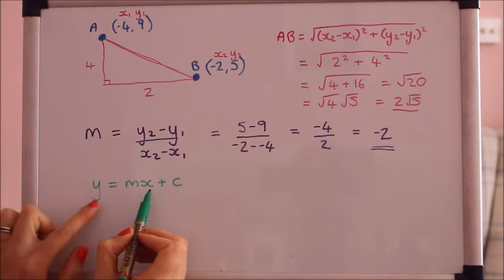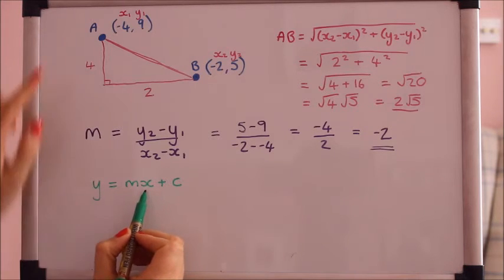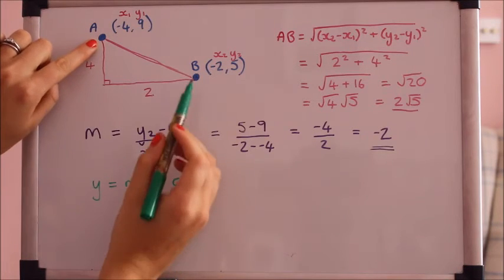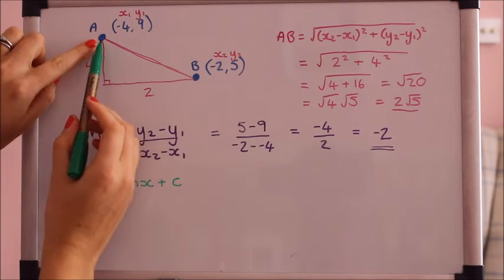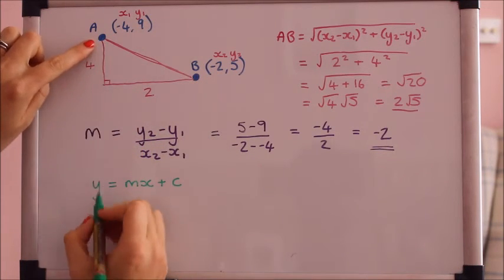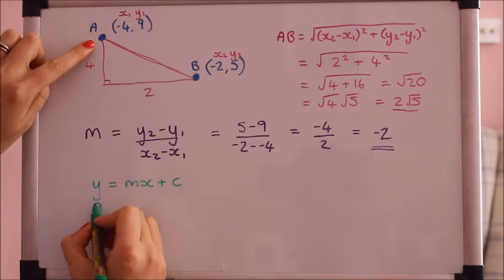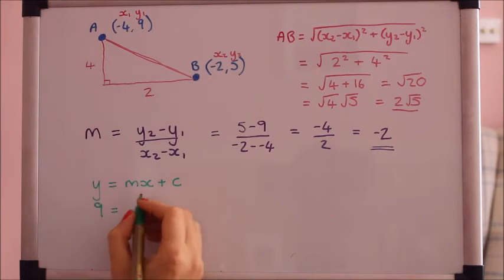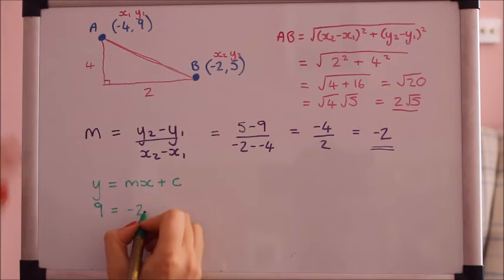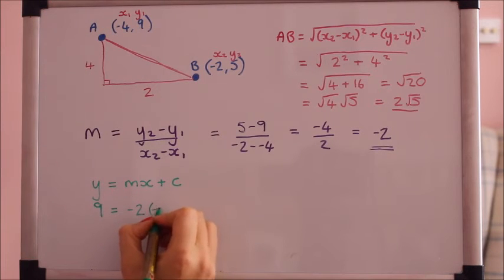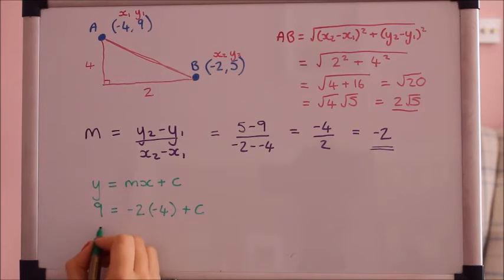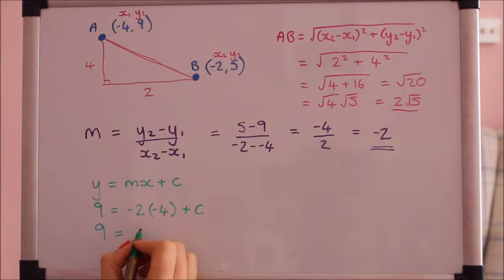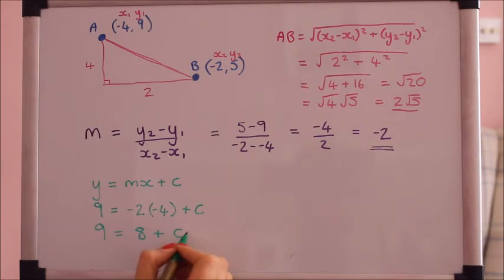We only need one point it goes through. Let's just pick this one, we can use that one later to check that it's right. So let's use this one here: y is 9, m is minus 2 as we worked out, x is minus 4 and we don't know c yet but we can work it out. Minus 2 times minus 4 is 8 so c must be 1.